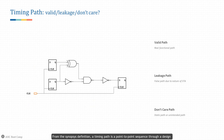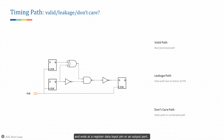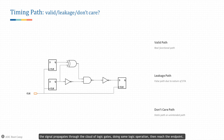From the Synopsys definition, a timing path is a point-to-point sequence through a design that starts at a register clock pin or an input port, passes through combinational logic elements, and ends at a register data input pin or an output port. What the timing path is describing is that whenever a data switching happens at the start point, the signal propagates through the cloud of logic gates doing some logic operation, then reaches the endpoint.